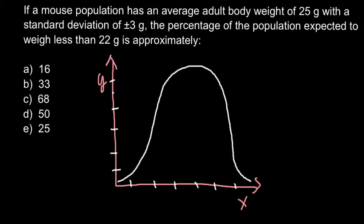Somewhere around here we would have the mean, and today's mean is the body weight of the mouse population, which is 25 grams. On this shoulder we would have all the mice that weigh less than 25 grams, and on this shoulder we would have mice that weigh 25 grams and more.